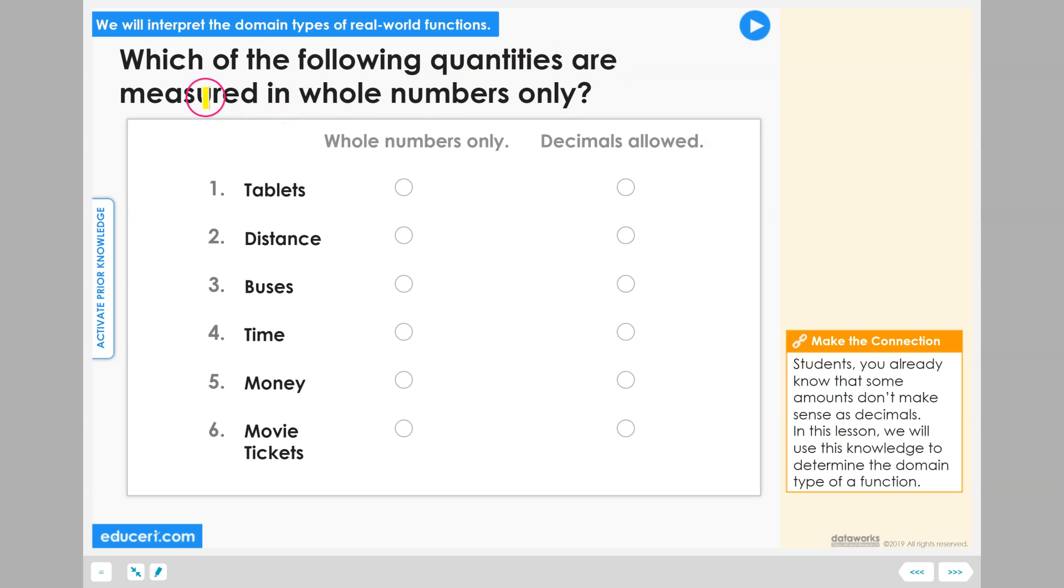Which of the following quantities are measured in whole numbers only? We have six different quantities that we are going to be thinking about whether we would only count these in whole numbers amounts or if we could count them in decimal amounts and have them make sense.